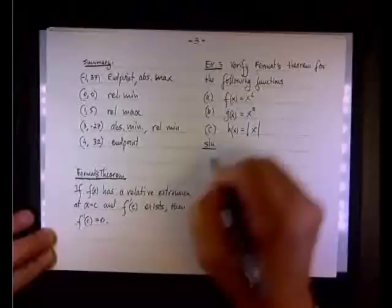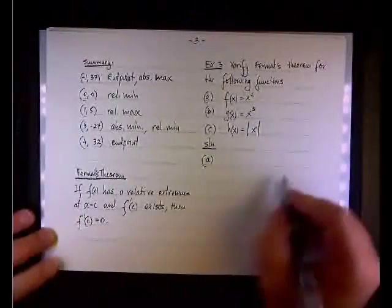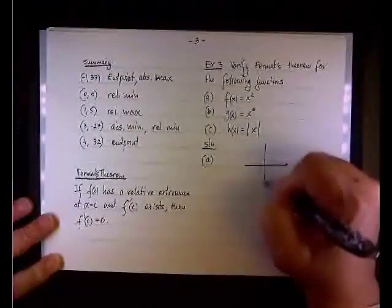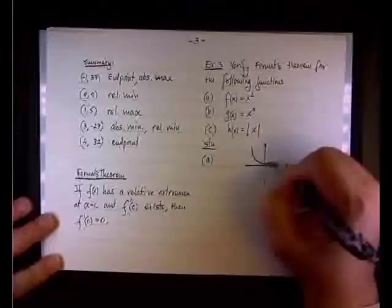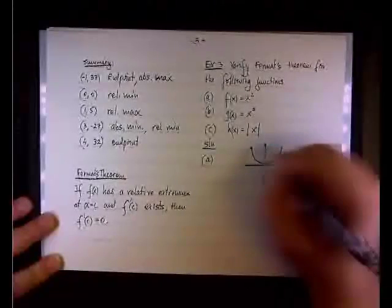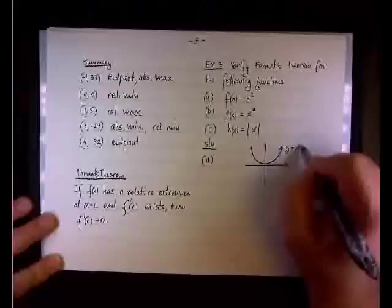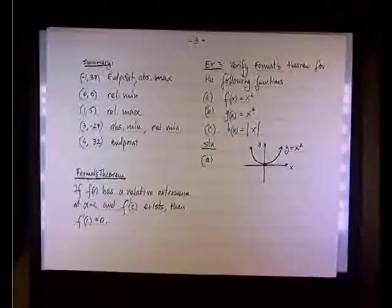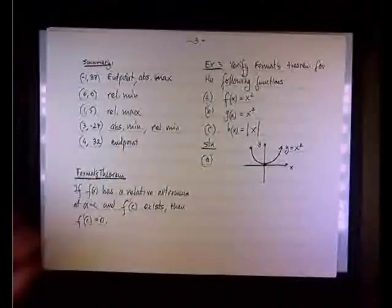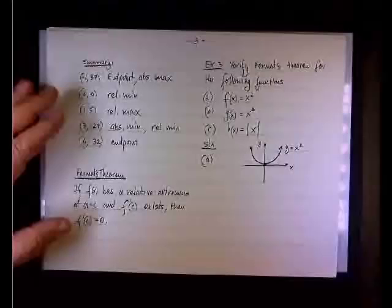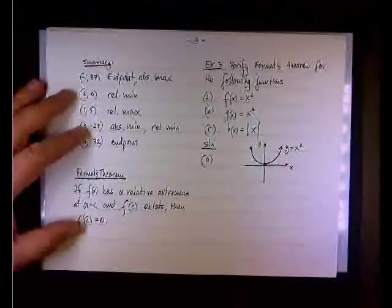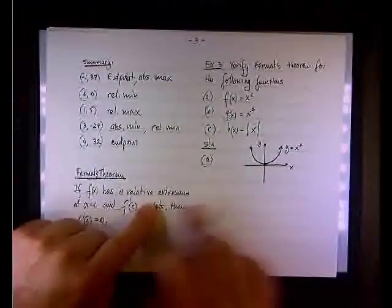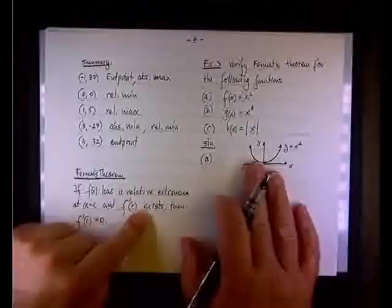So we are working on the first one. We are well familiar with this function. It's a parabola, the base parabola. Looks like that. And it's obvious that we have a relative minimum, as well as absolute minimum, at x equals zero. So we check the derivative. We are convinced that f(x) has a relative extremum just by visual inspection.